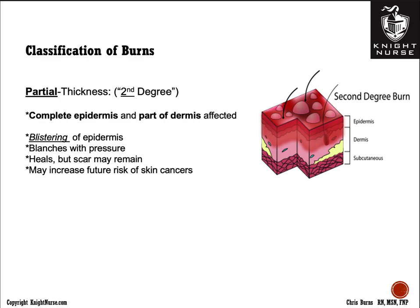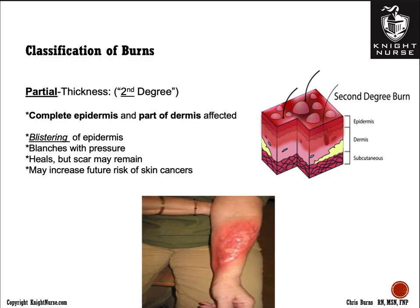It blanches with pressure — when you push down on the erythematous area and let off, you leave a light fingerprint and then the color comes back in. It heals, but patients may have scars, and studies indicate that significant partial thickness burns can lead to an increased skin cancer risk in the future. An example shown here looks like a boiling water burn that caused a partial thickness second degree burn with erythema and blistering.